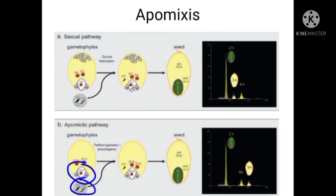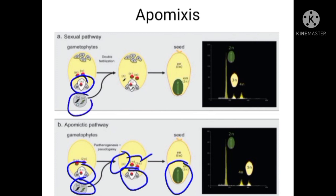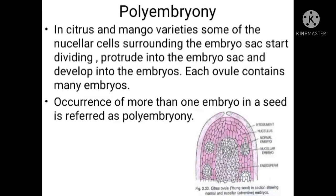In the diagrammatic representation of apomixis, the egg cell formed is diploid in nature — formed without reduction division. One male gamete can fuse with the polar nuclei, but the diploid egg cell automatically develops into the embryo without fusion with a male gamete. In normal sexual reproduction, the male gamete fuses with the egg to form a zygote, but in apomixis the diploid egg directly develops into the embryo.